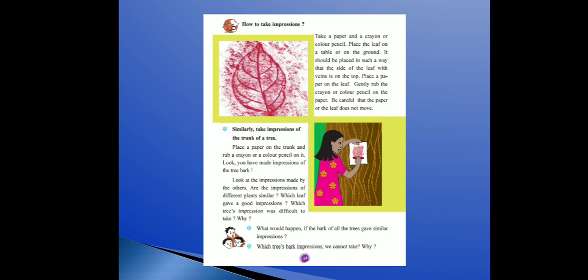Similarly, take impressions of the trunk of a tree. Place a paper on the trunk and rub a crayon. Picture mein dikhaya diya hai ki ek ladki hai jo trunk ke upar paper rakhti hai, phir uske upar crayon ya pencil color se aise rub karti hai — aur look, you have made an impression of the tree bark. Is tarah se tree ki bark ki impression, uski chhaap pad jaati hai.